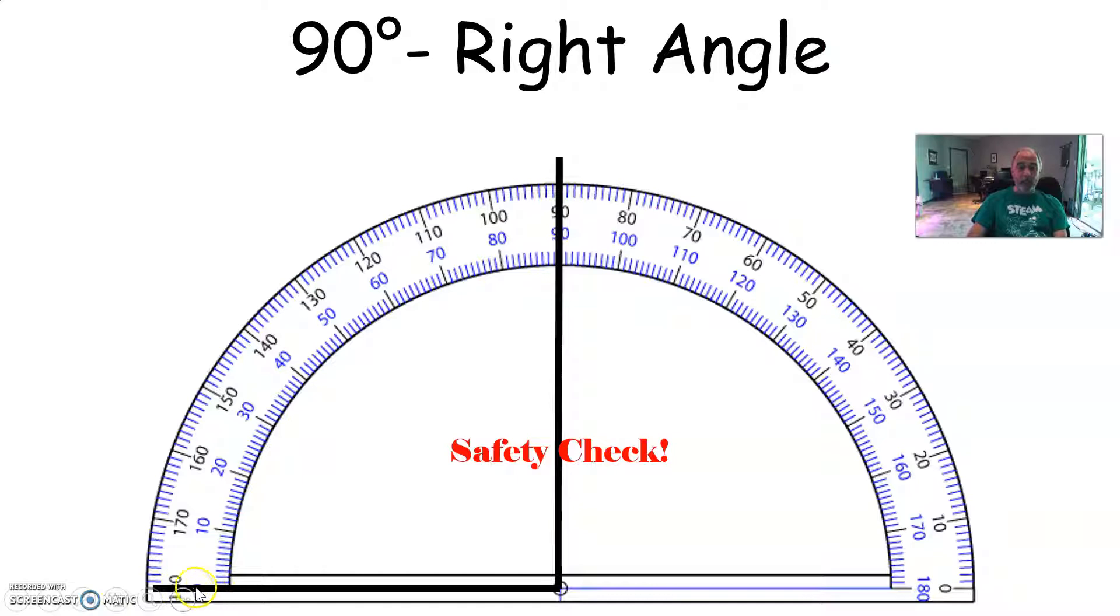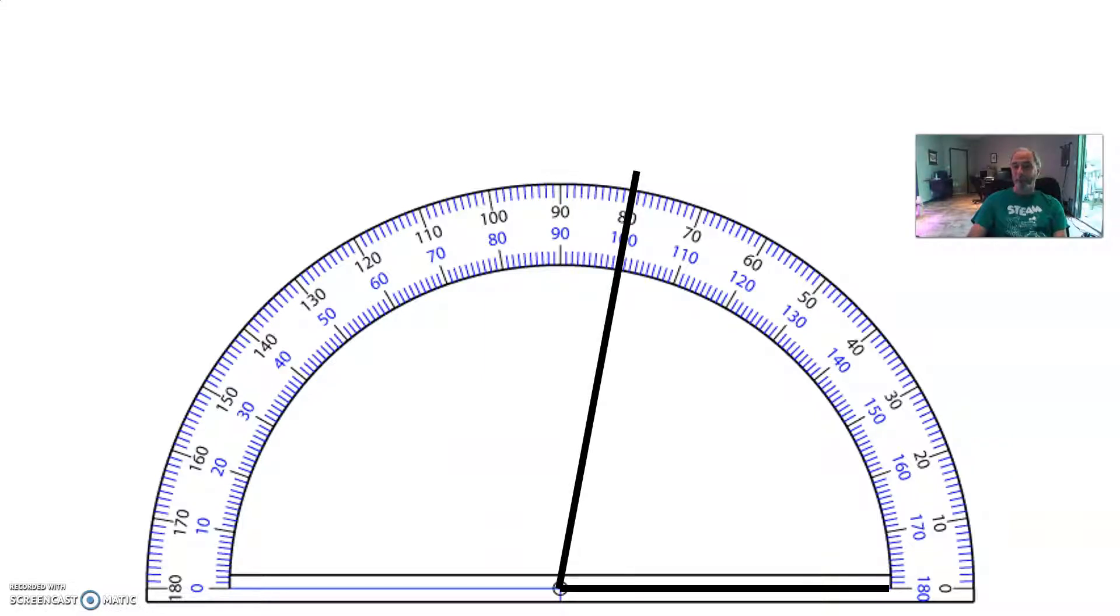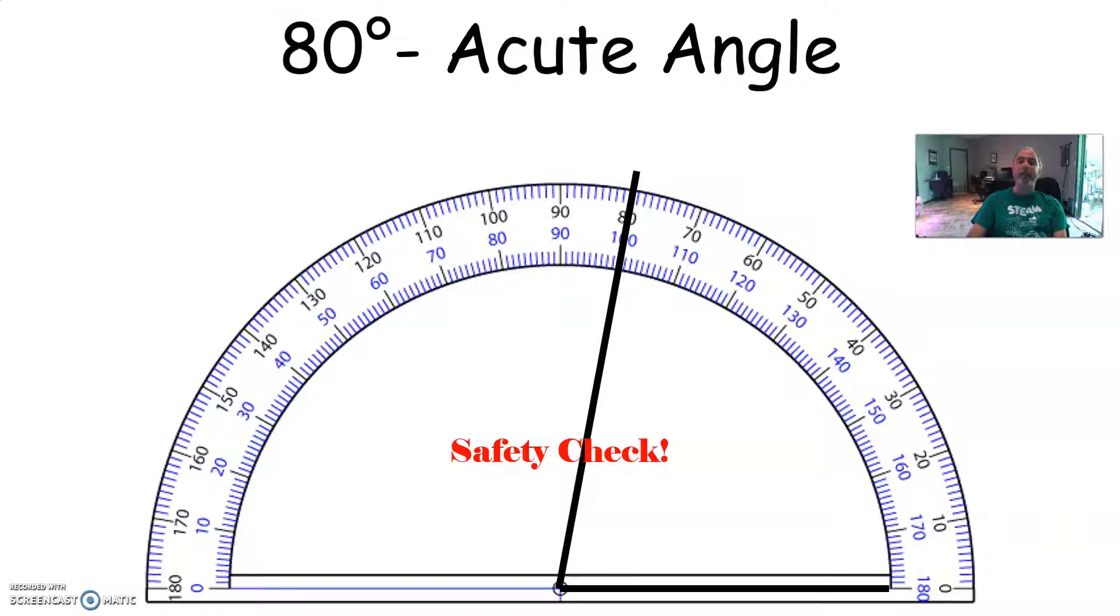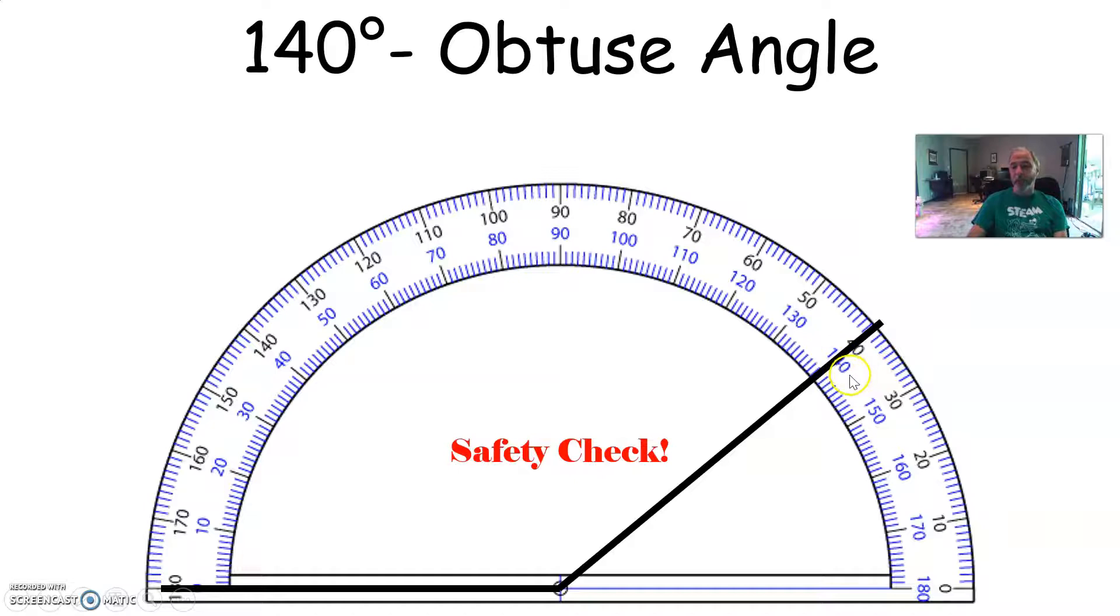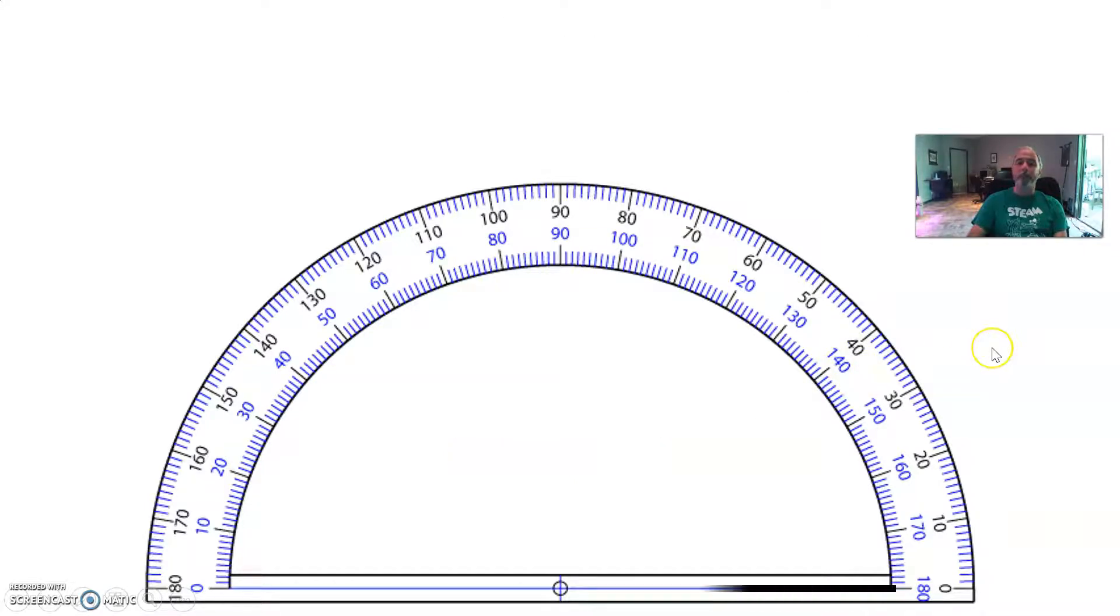I know this because it lines up here with the zero, and the other side of the angle is straight up and down, forming a right angle or a squared corner. Okay, how about this one? Hit pause if you need to. All right, what is it? Safety check. Are we acute or obtuse? You got the right numbers? That's right. 80 degrees. This is an acute angle, so again, this time it's pointed to the other side of the protractor, so I'm going to use the top row of numbers, and this is lining up over the 80-degree mark.